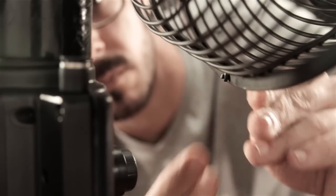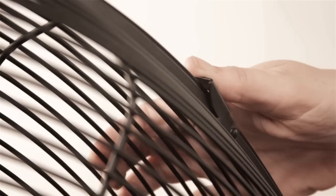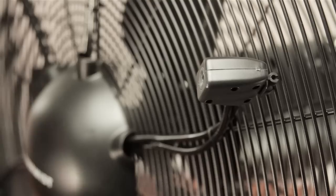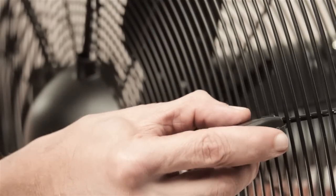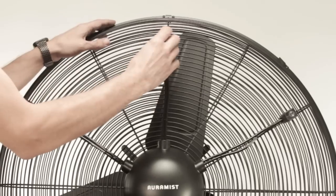Then secure all the hinges around the outer rim of the fan guards. Step 12. Connect all six nozzle housings by gently pushing them onto the front fan guard.